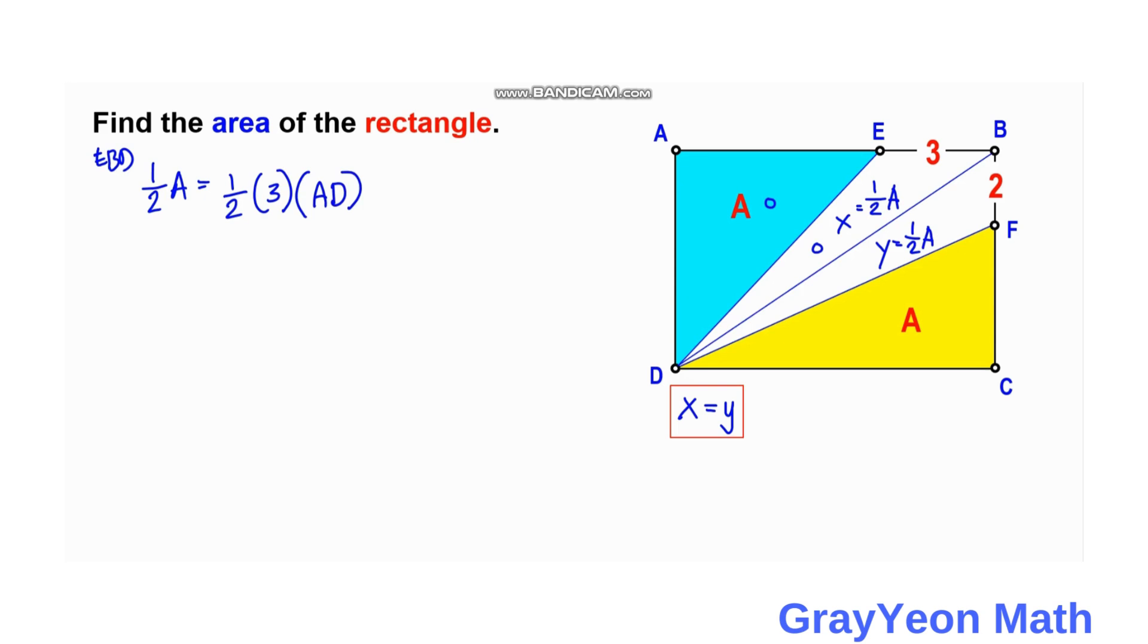While for this triangle AED, the area is equal to one half times AE times AD. So we can simply divide these two equations, so this cancels out, and this also cancels out, and this gives us one half is equal to 3 over AE. So AE, if you just cross multiply, so AE will be 6 units.